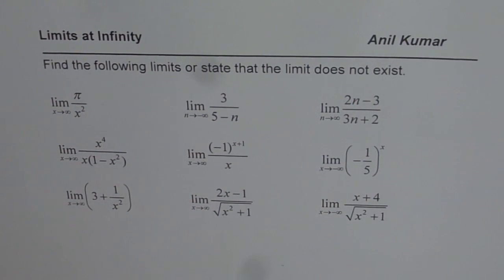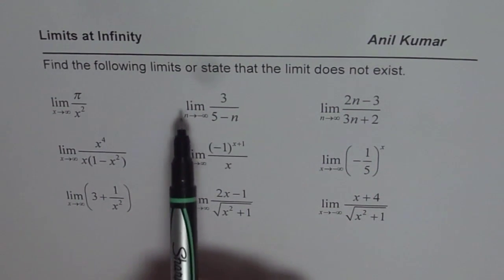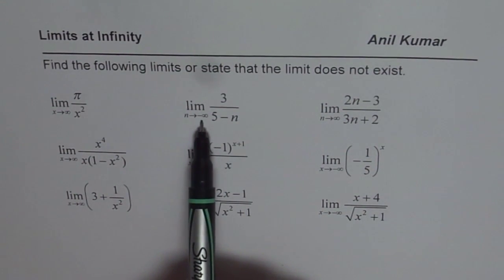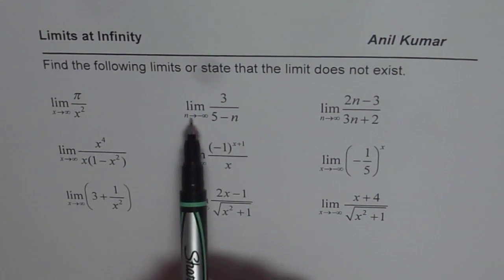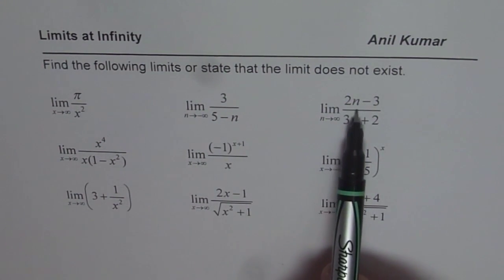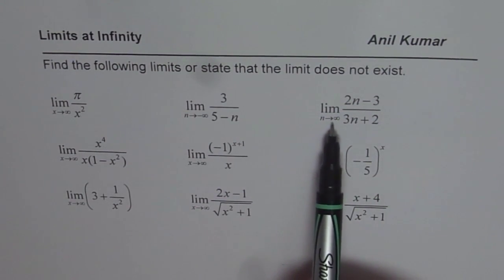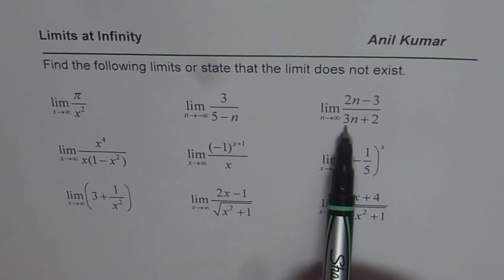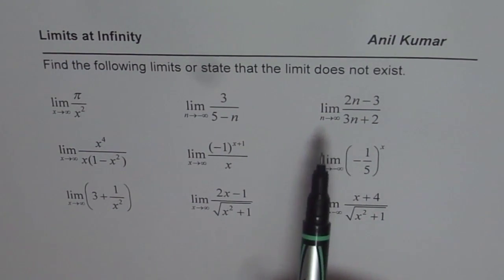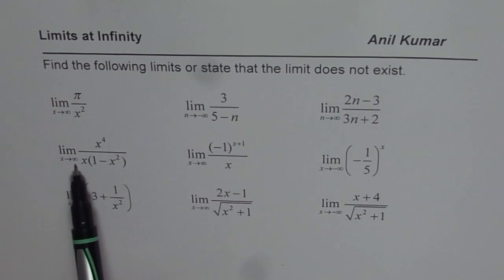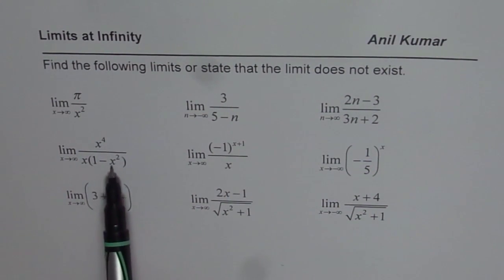The first one is the limit as x approaches positive infinity for π over x squared. Then we have the limit when x approaches negative infinity for 3 over 5 minus n. Limit of 2n minus 3 when n approaches positive infinity. Now it is 2n minus 3 divided by 3n plus 2. Limit when x approaches infinity for x to the power of 4 divided by x times 1 minus x squared.